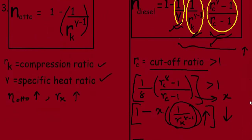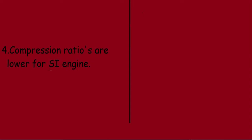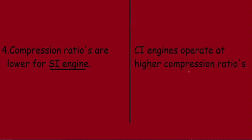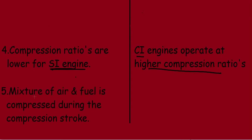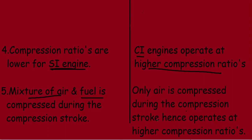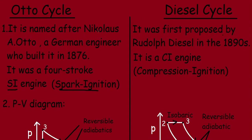The fourth point: compression ratios are lower for SI engines, but CI (diesel) engines operate at higher compression ratios. This is because in SI engines, a mixture of air and fuel is compressed during the compression stroke, making it more prone to detonation or knocking, which limits the compression ratio. In CI engines, only air is compressed, so they can safely operate at higher compression ratios.